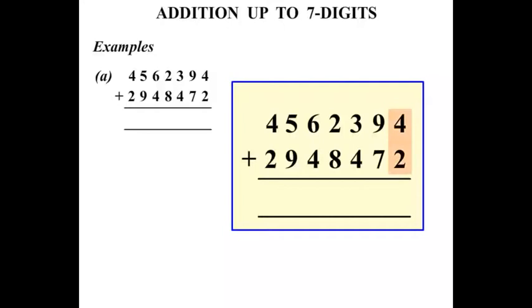Starting from the right, 4 plus 2 is 6. 9 plus 7 is 16. So to write 16 we put the 6 down and carry the 1.